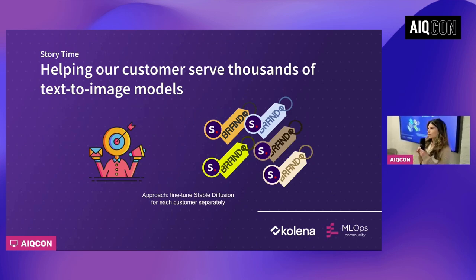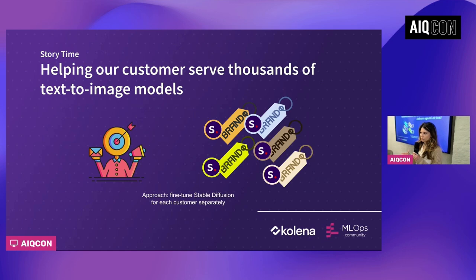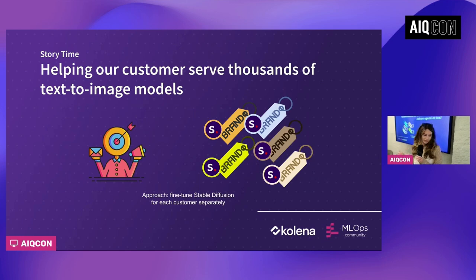So what they want to do is fine-tune a stable diffusion model for each of the brands. If you're not familiar with the text-to-image space — I know a lot of people are into LLMs, but text-to-image is a bit less known — stable diffusion is the go-to open-source model. Everybody can download the weights and fine-tune it if they want to.